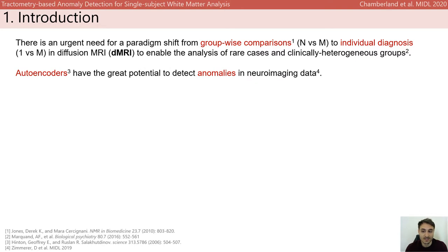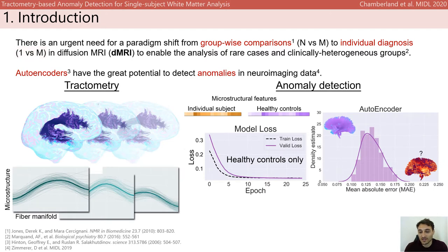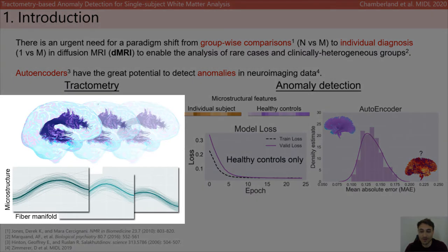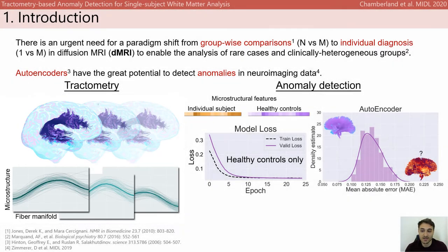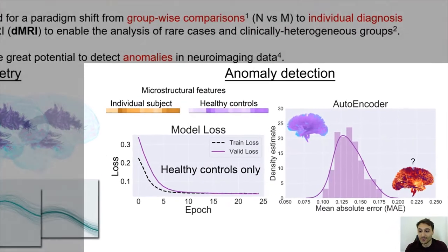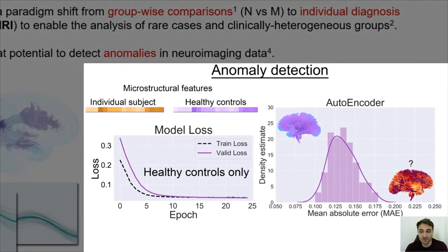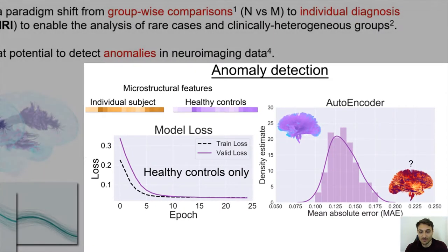Unsupervised techniques, like autoencoders, have great potential to detect anomalies in neuroimaging data using the so-called one-class classification. Here, we present an anomaly detection framework to push diffusion MRI tractometry towards single-subject analysis. This is done by profiling microstructural properties along the manifold of white matter pathways, and by learning a set of normative microstructural features to better discriminate patients from controls.